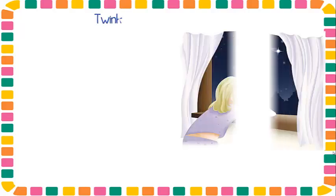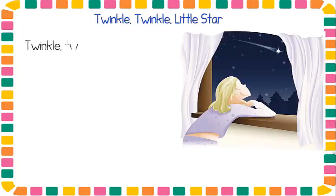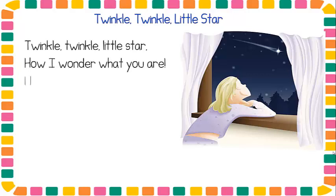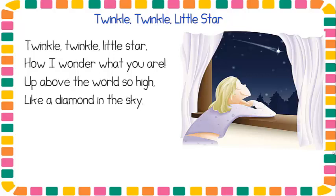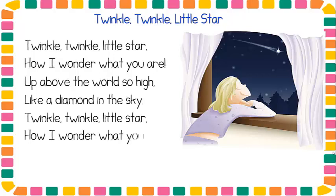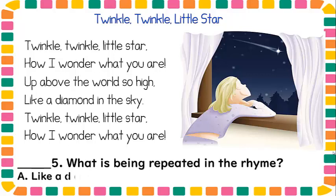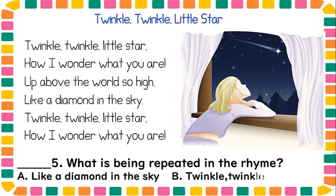Next: Twinkle, twinkle, little star. How I wonder what you are. Up above the world so high, like a diamond in the sky. Twinkle, twinkle, little star. How I wonder what you are. Number five: What is being repeated in the rhyme? A. Like a diamond in the sky. B. Twinkle, twinkle, little star. You're right — letter B.